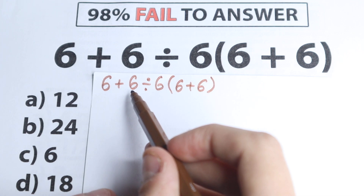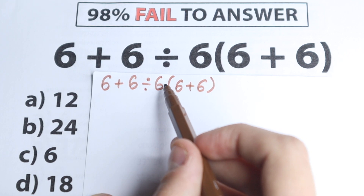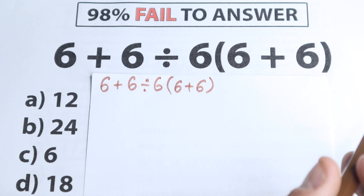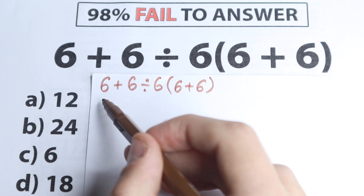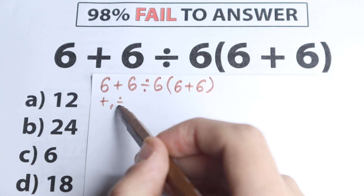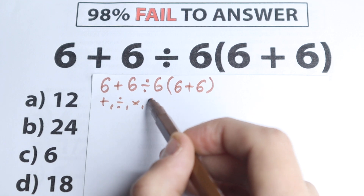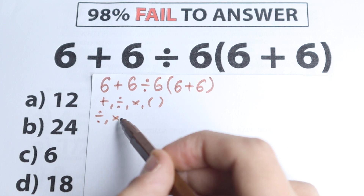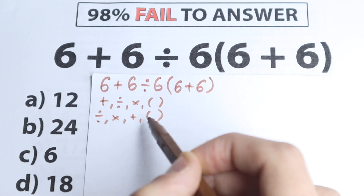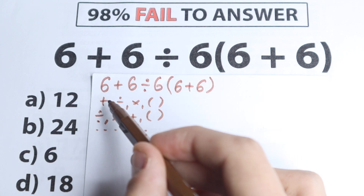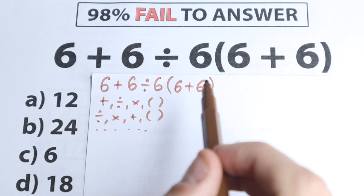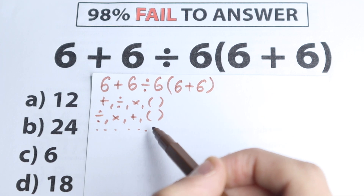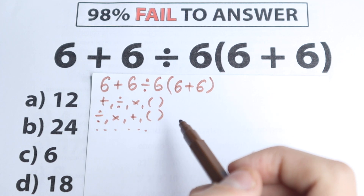Do we need to add first from left to right, divide first, or multiply first? Maybe we need to solve the expression in parentheses first. One part of students, for example, adds first from left to right, then divides, then multiplies, then parentheses. Another part thinks: divide first, then multiply, then add, then parentheses. With these four elements we can get a lot of combinations, but in math we need to know the one and only correct answer, because obviously whatever order of operation we select is going to create a different answer.